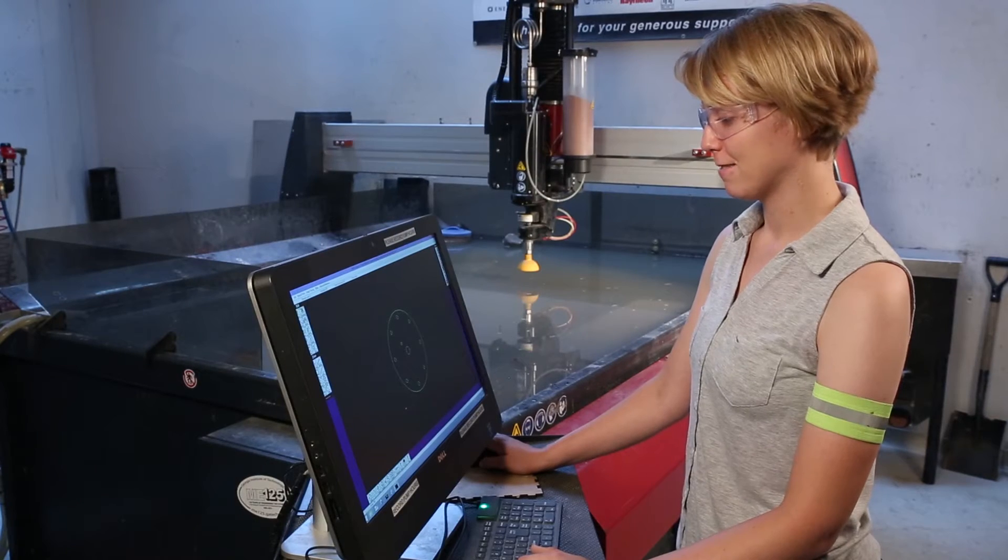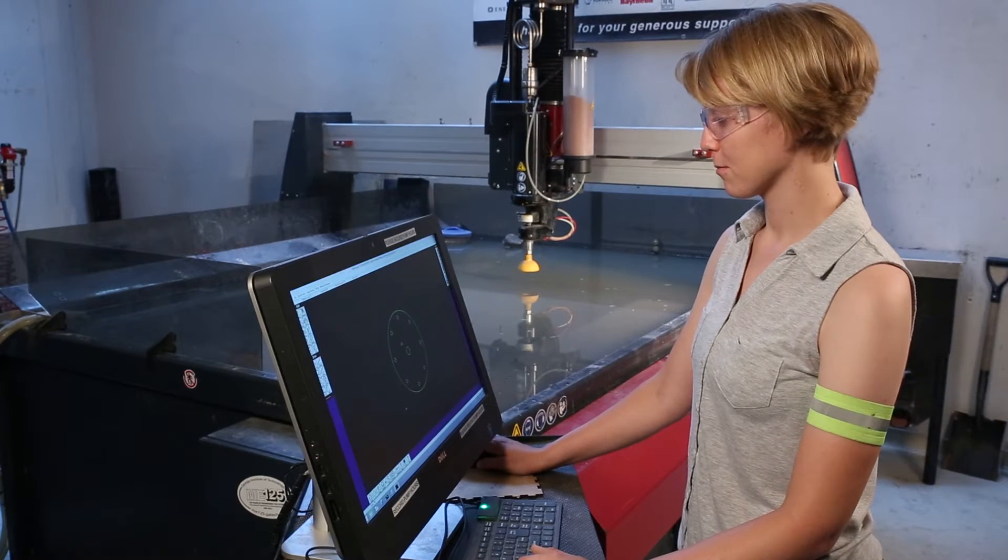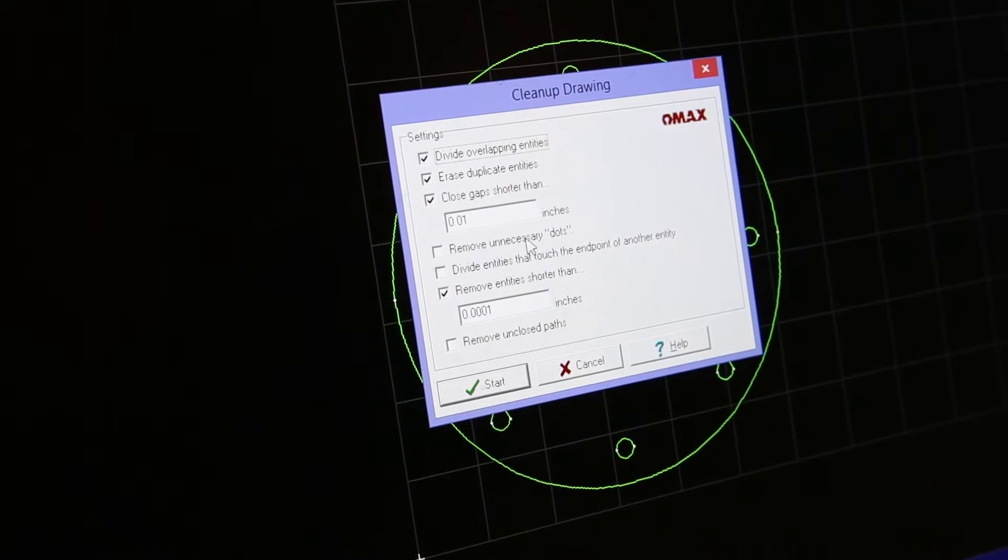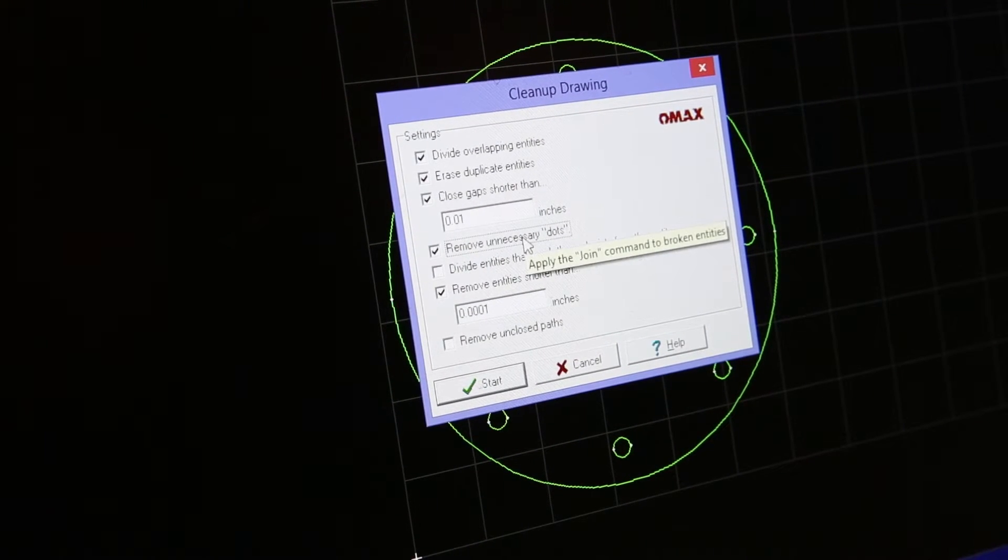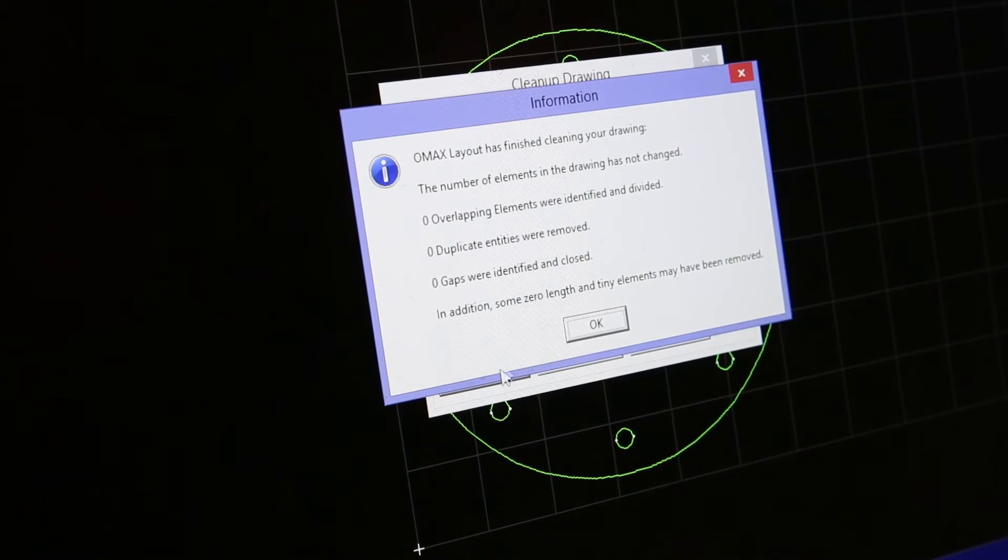Let's walk through how to use the Jet in 10 easy steps. Once we've opened our part in Omax Layout, clean the drawing to make sure that our file is primed to be waterjetted. Go to the Clean Part button, check off every box, and then click Go.